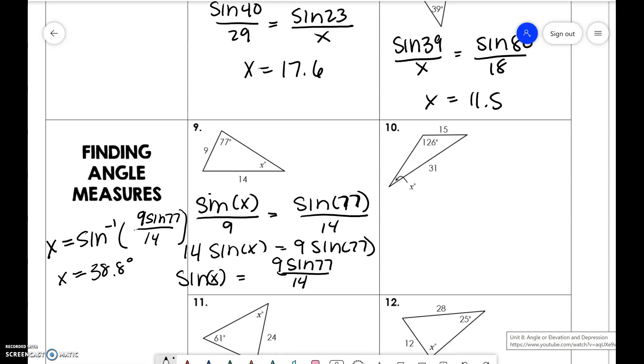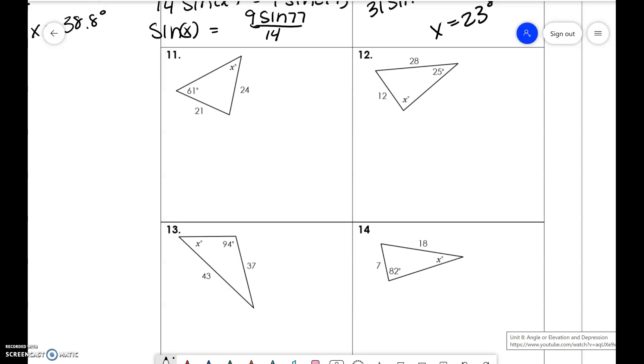Next we have sine of x over 15 is equal to sine of 126 over 31. So if we do 15 times sine of 126 and divide it by 31, then you take sine inverse of that number, you're going to get x to be 23 degrees.